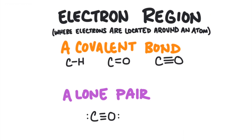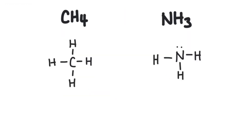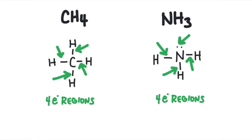An electron region is either a covalent bond — it could be a single, double, or triple bond, and those count as one region — or it'll be a lone pair of electrons. So NH3 and CH4 both have the same number of electron regions: four regions. In CH4, all four of those regions are bonds, whereas in NH3, three regions are bonds and one region is a lone pair.